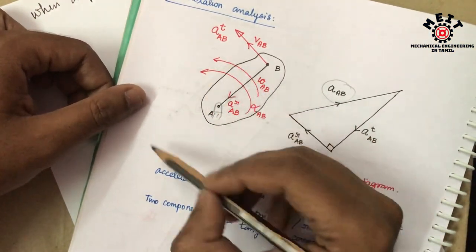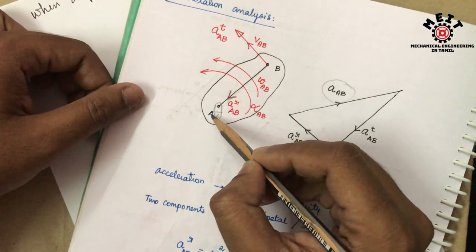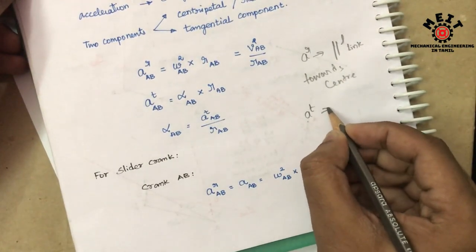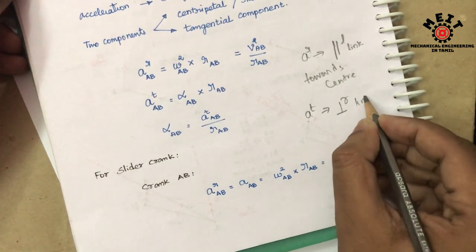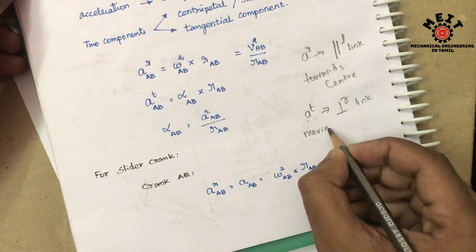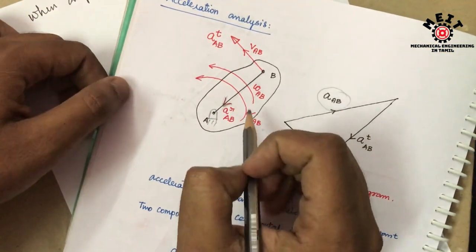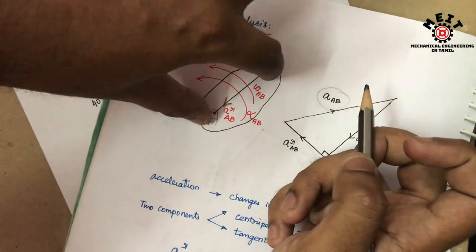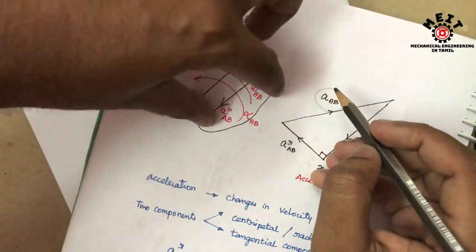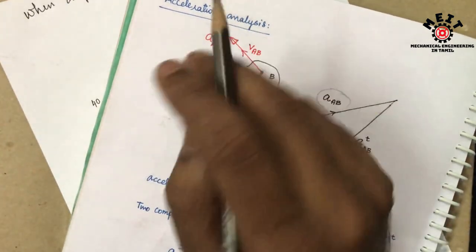If you look at the link, the radial component is parallel and the point will rotate around. These are the horizontal components. The radial component moves towards the center boundary. The center is that fixed point. Then the tangential component will be perpendicular to the link, and it can move in both directions along the link's motion.